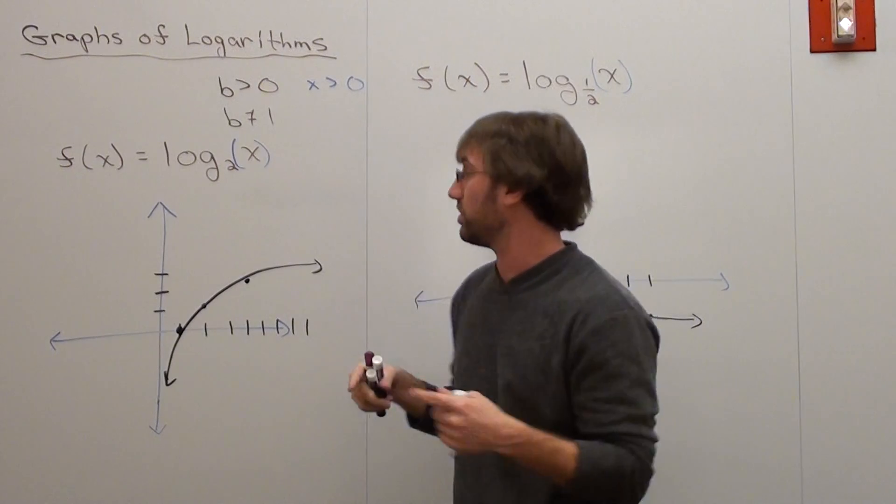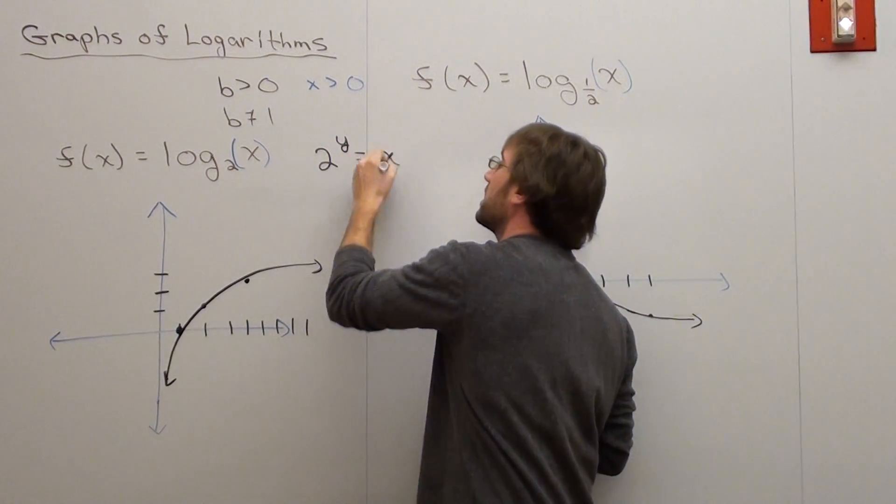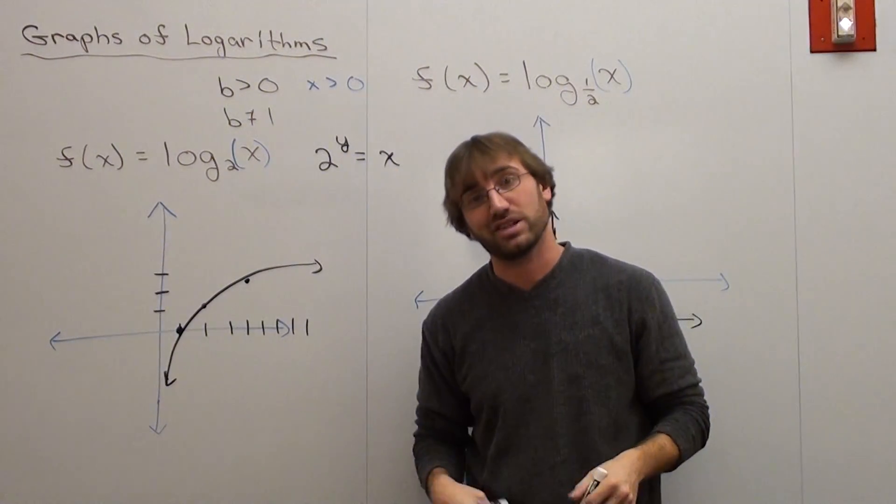You take the base of f of x equals x. Basically, what you're trying to do if you're making tables is you say, okay, 2y equals x. Substitute in values for y, and that will give you the x value.